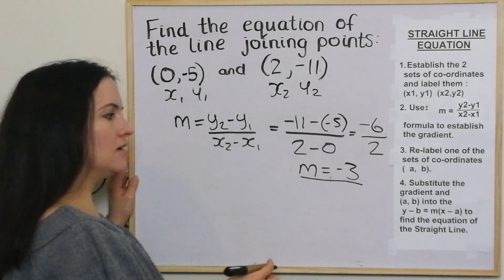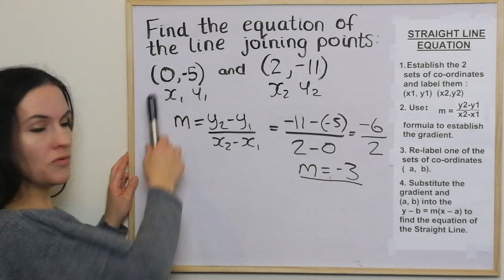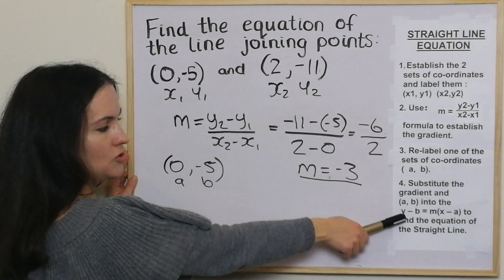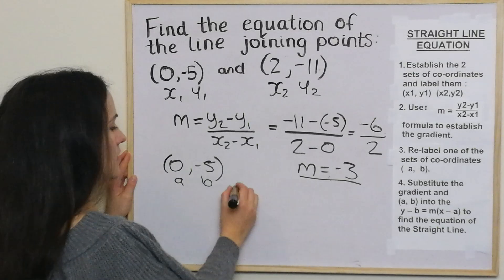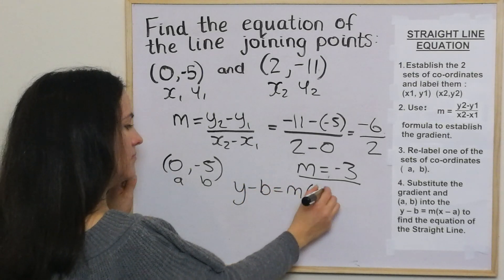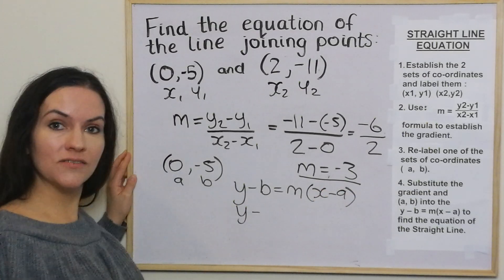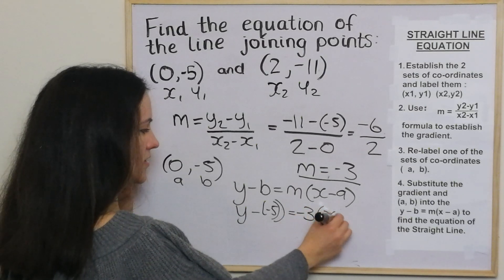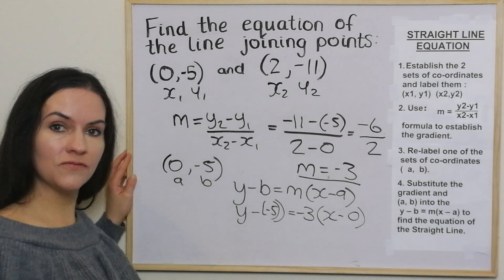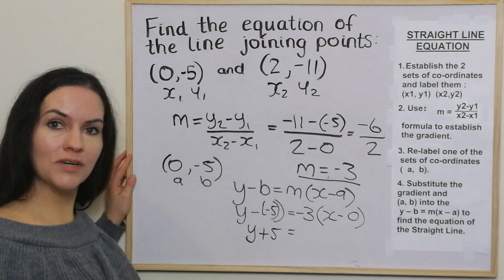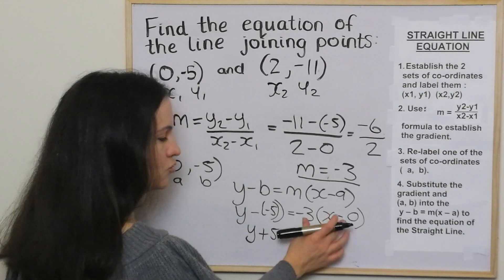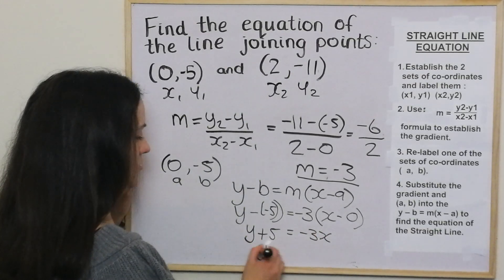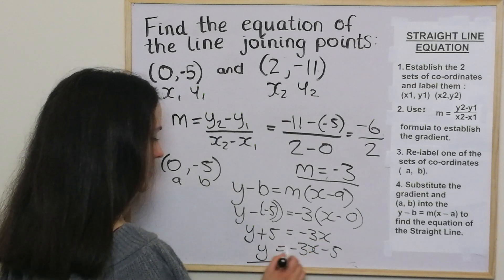We've got this point and the gradient. Now we relabel one of the sets of coordinates a, b. I'm going to go with this one here: 0, negative 5 — call that a and b. Substituting a, b and the gradient into the formula y minus b equals m bracket x minus a: y minus negative 5 equals negative 3 bracket x take away 0. That becomes y plus 5 equals negative 3x, and the 0 disappears because negative 3 times 0 is 0. So y equals negative 3x take away 5. And that's the answer.